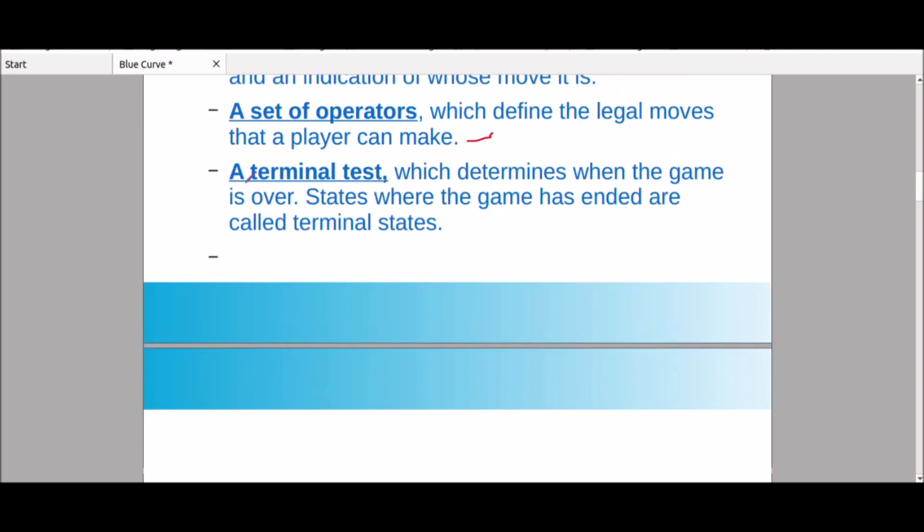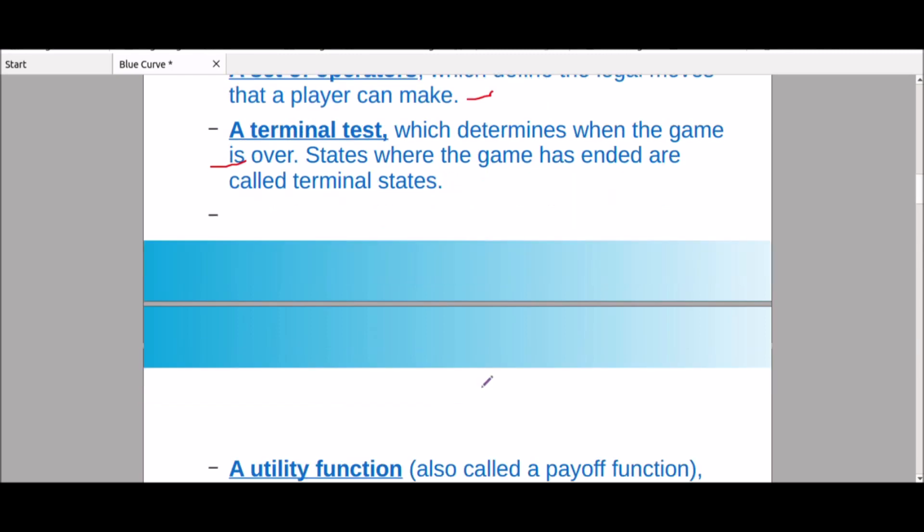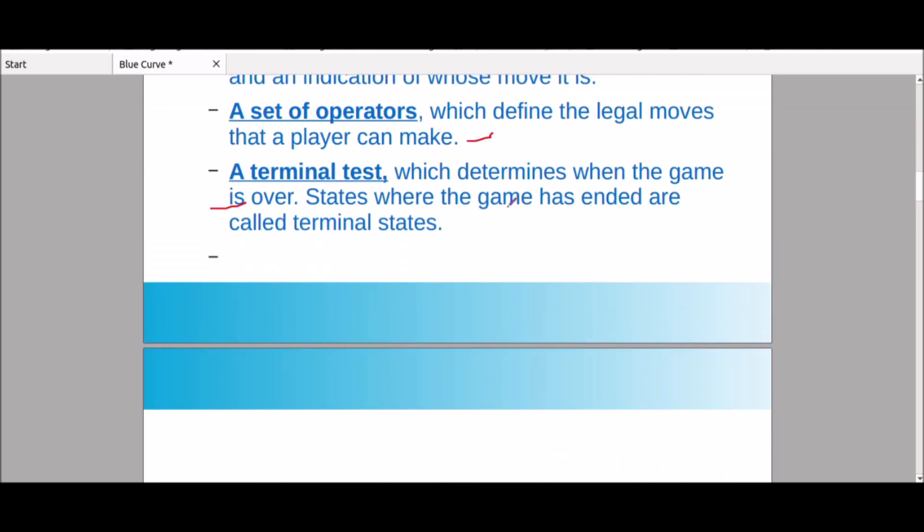Terminal test which determines when the game is over. So we can see this test and the game is over if we have checkmate. The game has ended are called terminal states. The terminal state is the point.